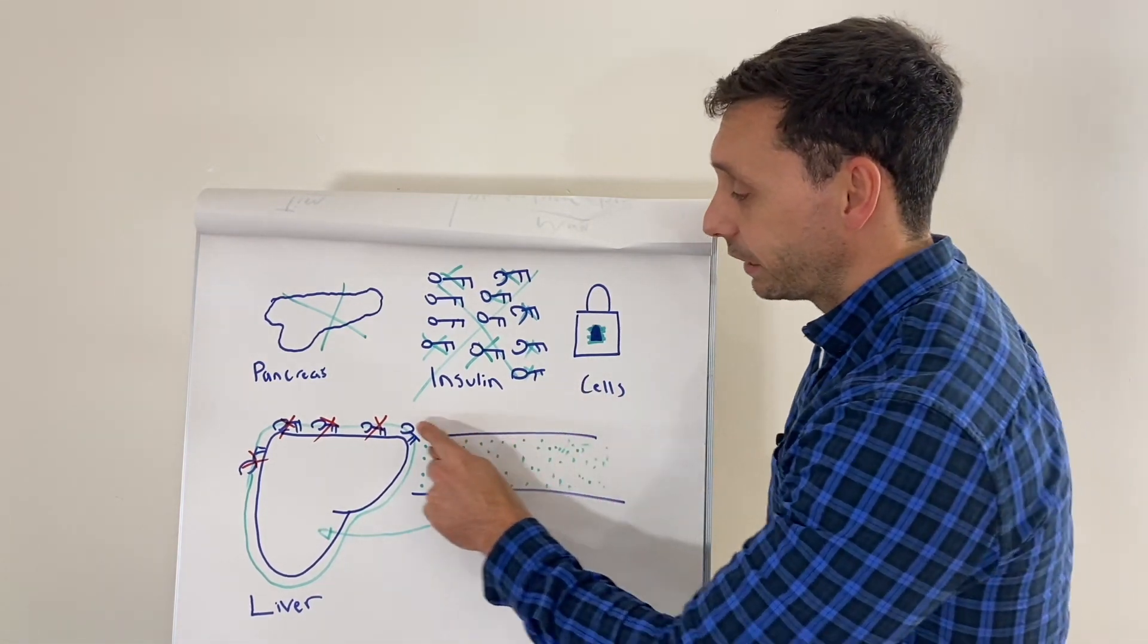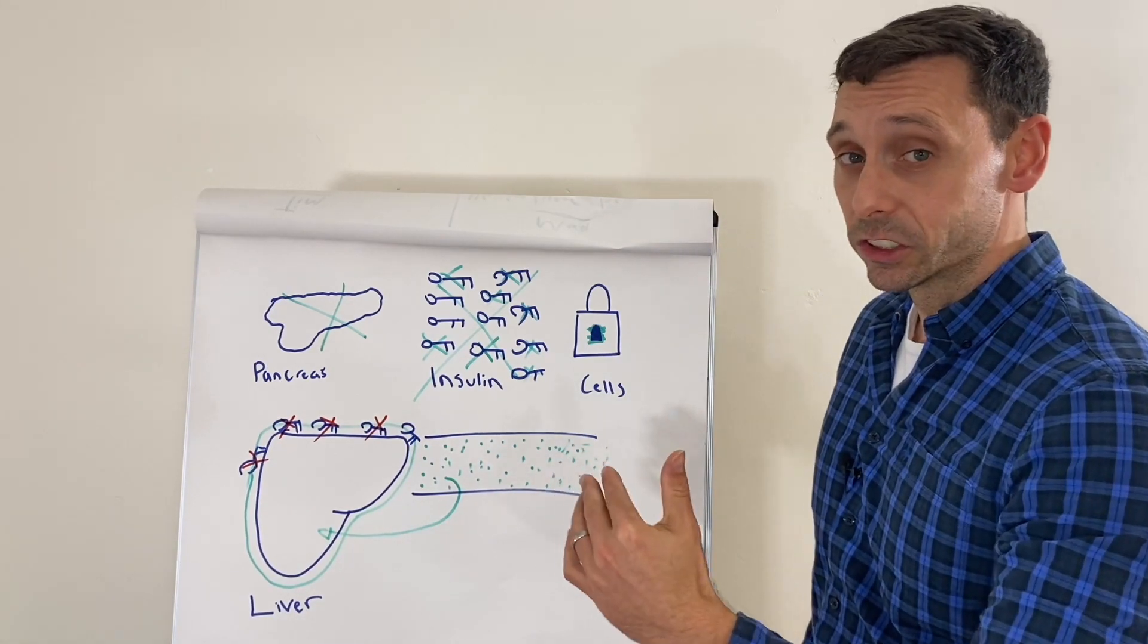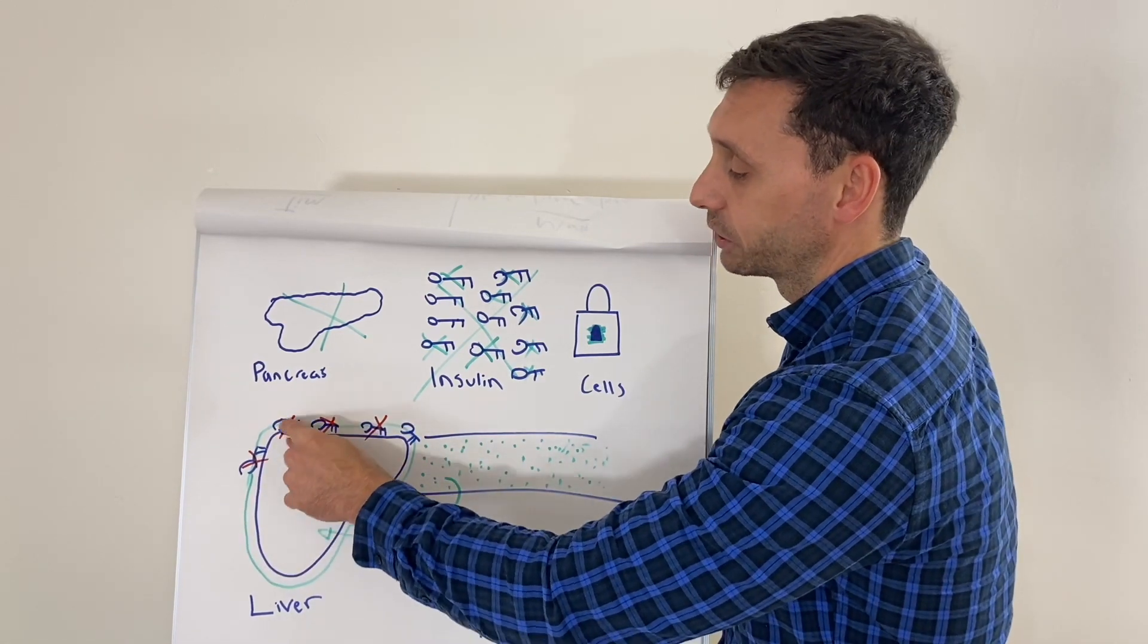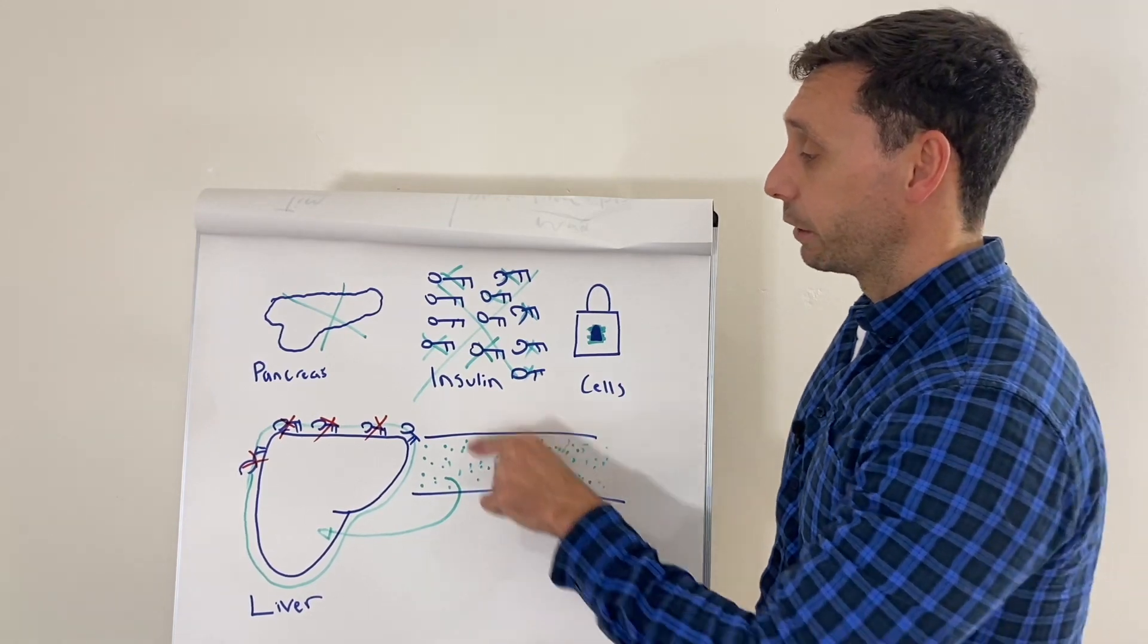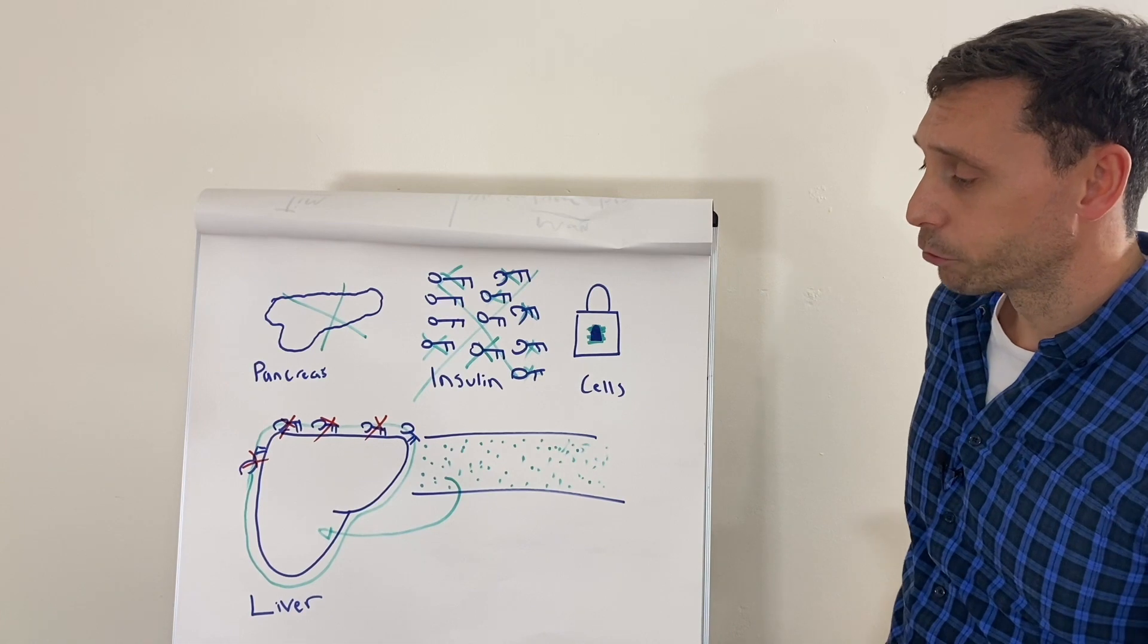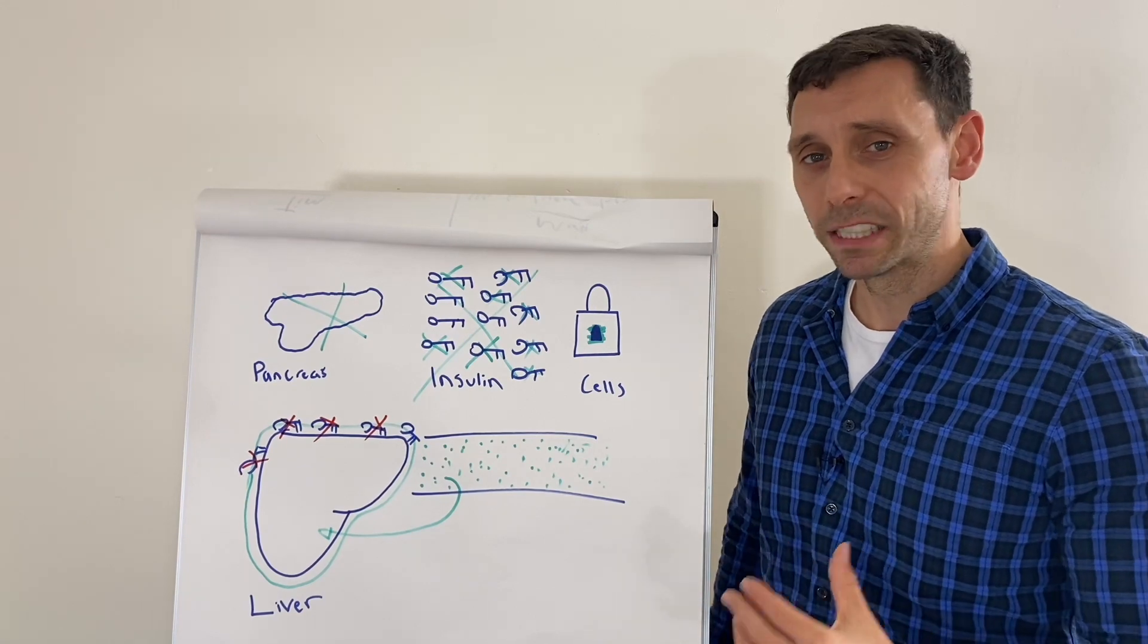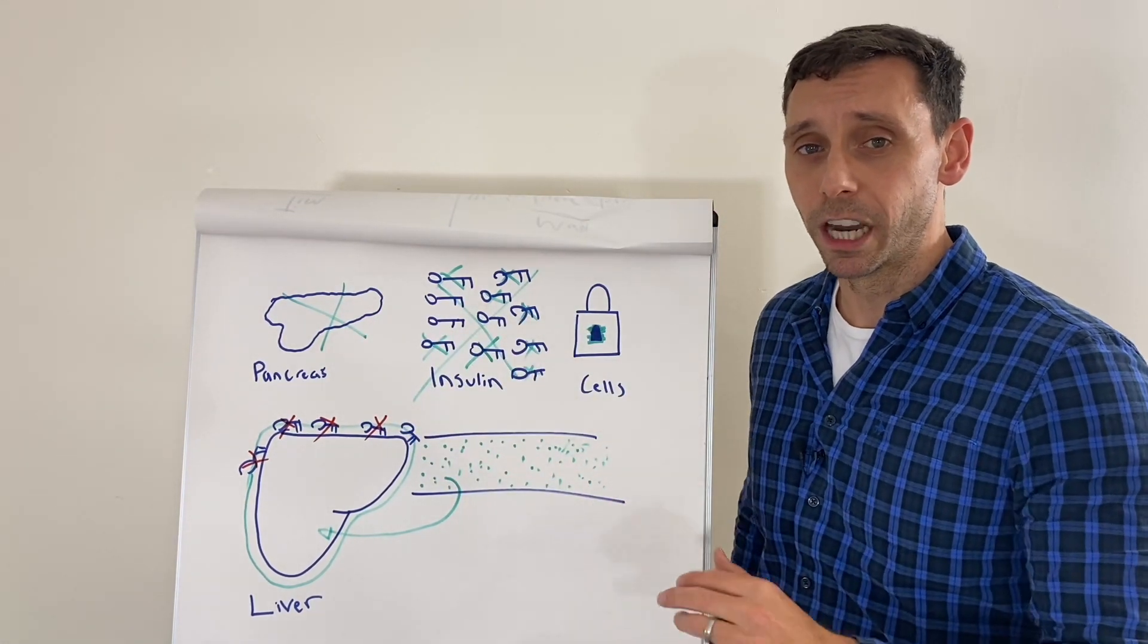So once again, with the treatment or the best form of treatment with lifestyle exercise and diet, it's trying to turn back this clock and start to mobilize these fat stores around the liver, which then allows the keys to work better, which then lowers the baseline glucose level. And it also does the same thing from the pancreas and at the other cells of the body. So this is why we're really keen to get people focusing on their health and looking after themselves in a much more holistic and better way, because without a doubt, this is the best treatment for type 2 diabetes.